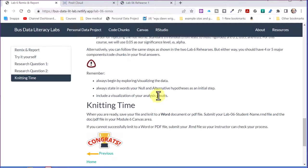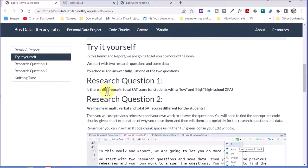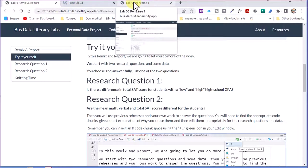And then down at the bottom, it says, remember to always begin by exploring the data. Always state the null alternative. We mentioned that and include a visualization. So we're going to do question one. And that comes from the example is in lab six, rehearse one. So I'm going to click over there to that.